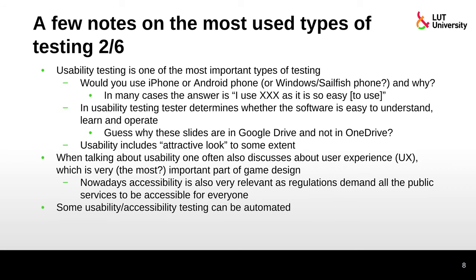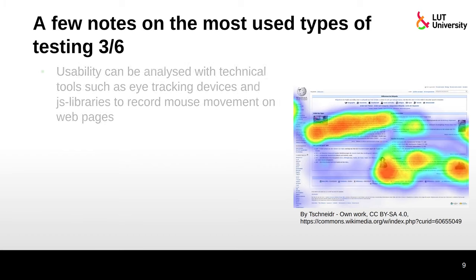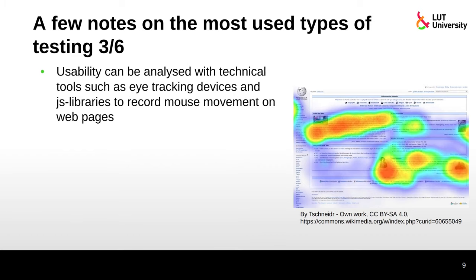Some usability and accessibility testing can be automated. There are services like WAVE that give you a report on what's not working and what should be improved. Companies like Siteimprove help automate usability and accessibility testing. Usability can also be analyzed with technical tools such as eye tracking devices, and there are JavaScript libraries used in web environments that record mouse movement on web pages.